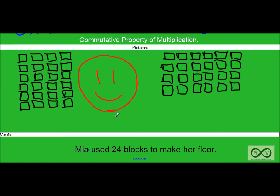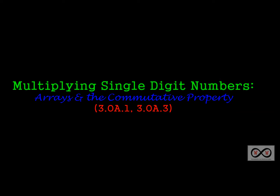That was a quick look at multiplying single-digit numbers using arrays and proving the commutative property. Thanks for checking out WorksheetsAndWalkthroughs.com, and we'll see you again next time.